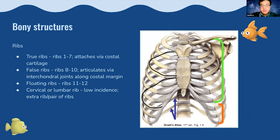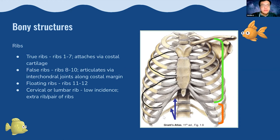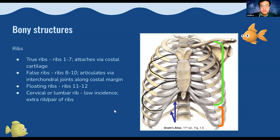There are usually 12 ribs. True ribs are ribs 1–7, which attach via individual costal cartilage. False ribs are ribs 8–10, attaching via interchondral joints along the costal margin. Floating ribs — ribs 11 and 12 — don't attach to the sternum at all. Cervical or lumbar ribs may also occur in some patients as an extra rib above the first or below the twelfth, though this is relatively low incidence.